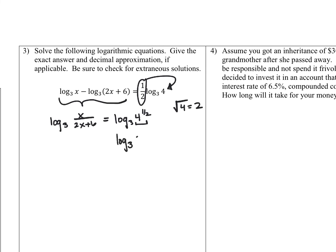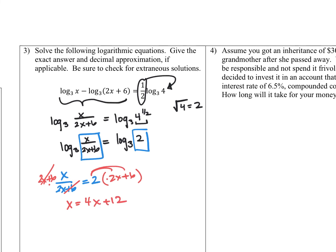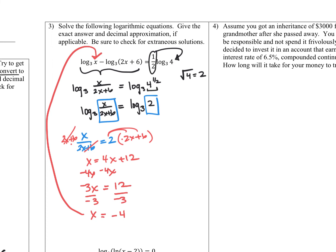So this is log base 3 of 2 equals log base 3 of (x over (2x plus 6)). Since two logs with the same base are equal, their inputs must be equal: x over (2x plus 6) equals 2. Clearing fractions by multiplying both sides by (2x plus 6), those cancel, and distributing on the right gives x equals 4x plus 12. Moving x terms to one side: negative 3x equals 12, so dividing by negative 3 gives x equals negative 4. But log base 3 of negative 4 doesn't work — you can't take the log of a negative number, so that's extraneous.